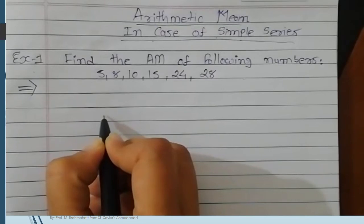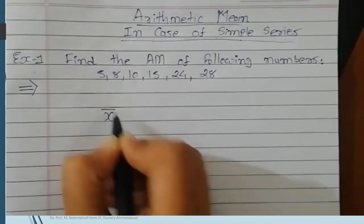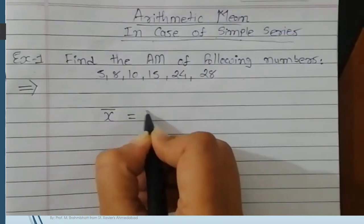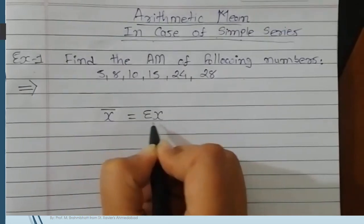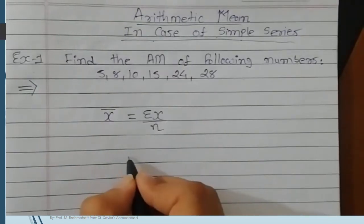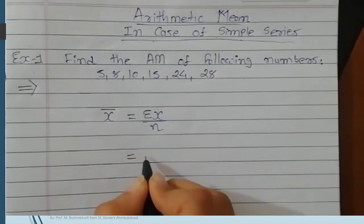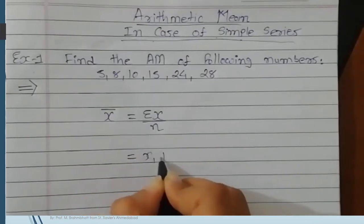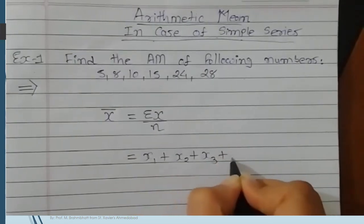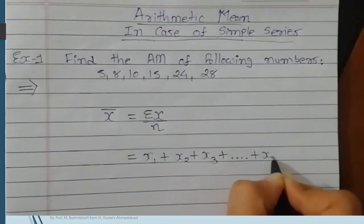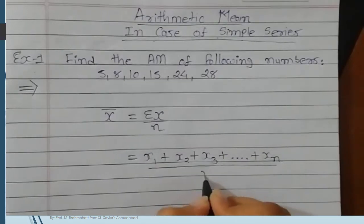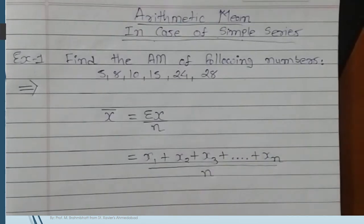First we will put the symbol to denote the arithmetic mean: x bar equals sigma x divided by small n, where sigma x equals x1 plus x2 plus x3 plus up to xn divided by the count of number of observations, which is n.